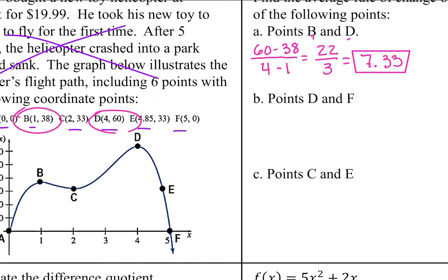Next one says to do D and F. So D is this one. F is this one. So we're going to do everything still the same. y2 minus y1. So 0 minus 60 over x2 minus x1. So 5 minus 4. 0 minus 60 is negative 60 and 5 minus 4 is 1. So the average rate of change here is negative 60.